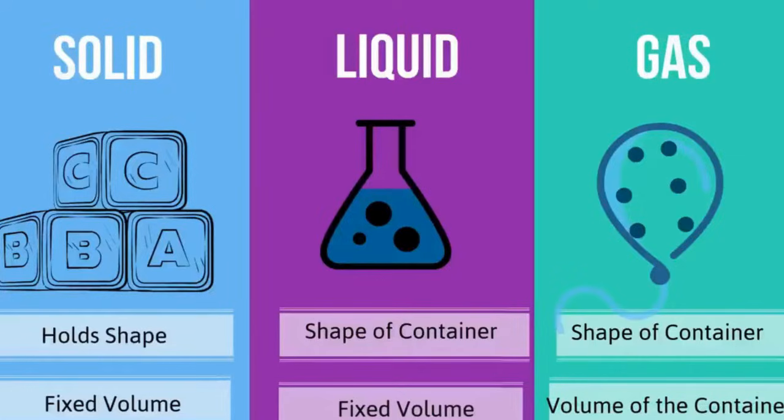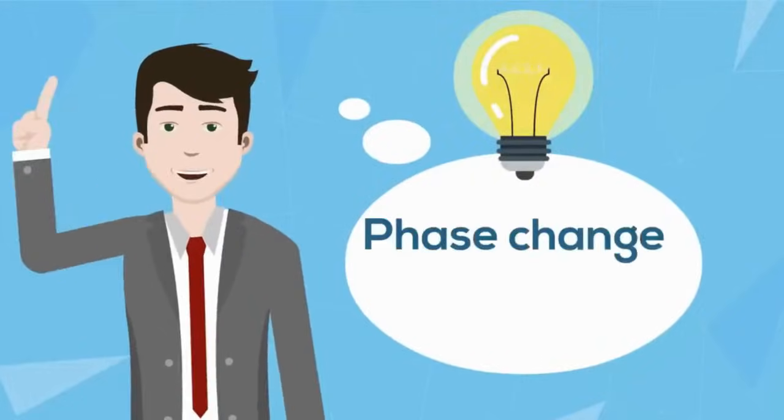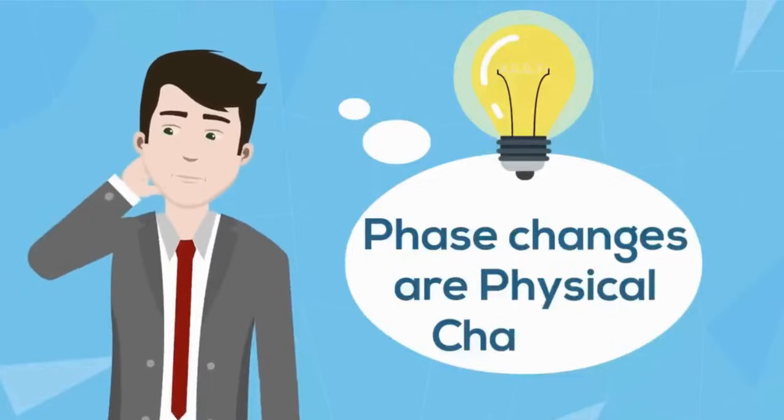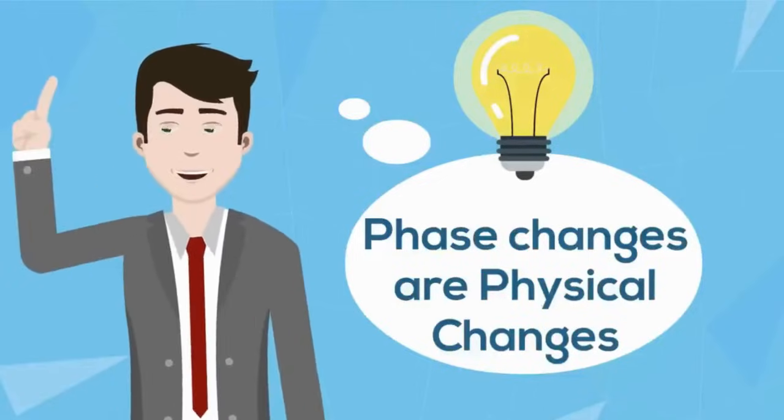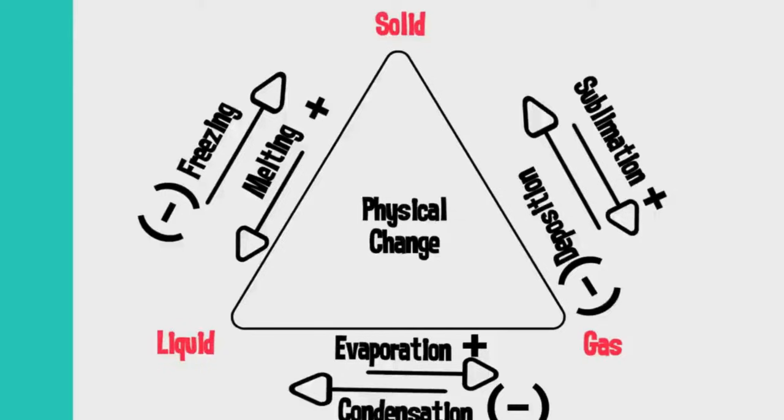Matter can also change from one phase to another when heat or pressure are applied. When matter moves from one phase to another, this is considered a physical change. This triangle summarizes how matter can move from one phase to another. The plus and minus signs indicate if heat is added or subtracted.